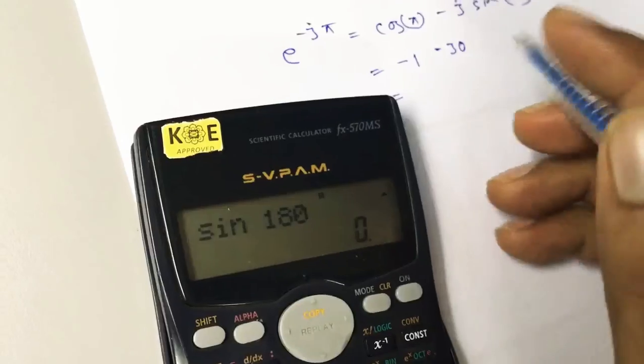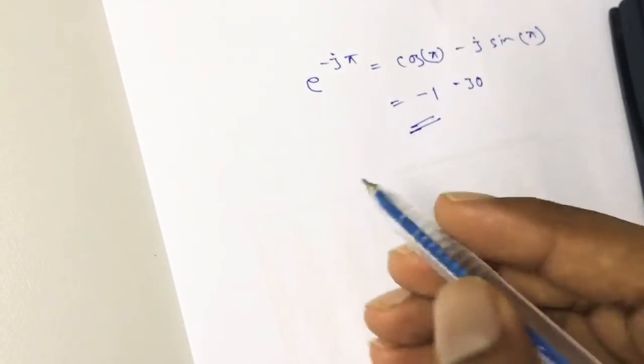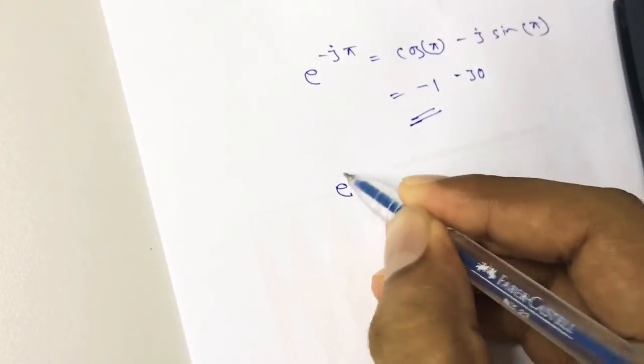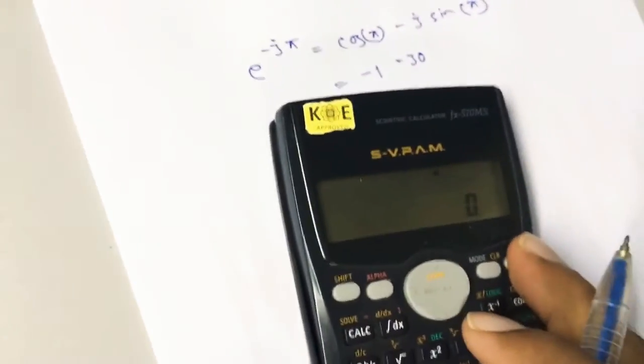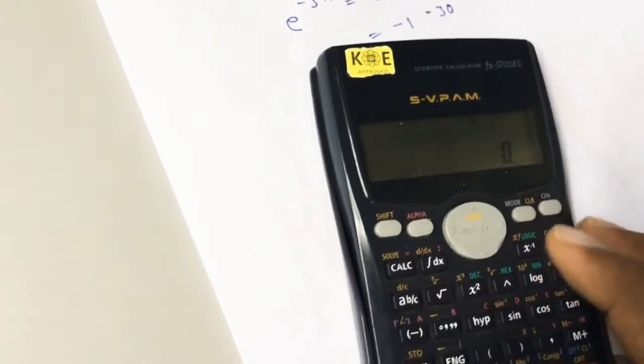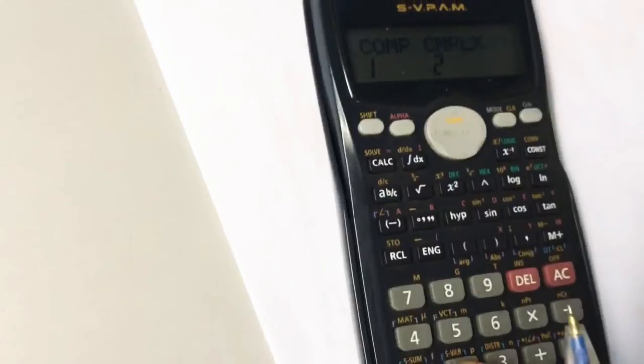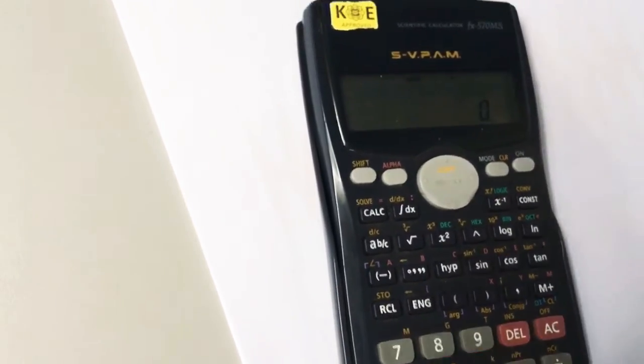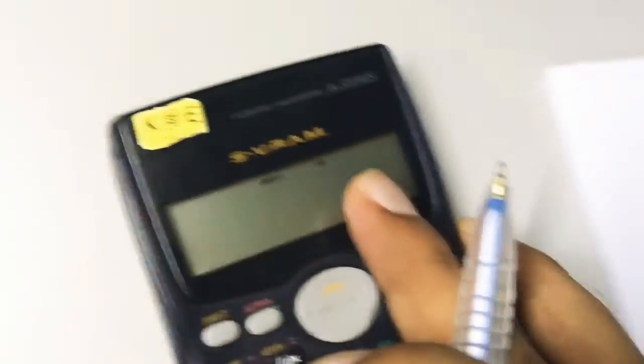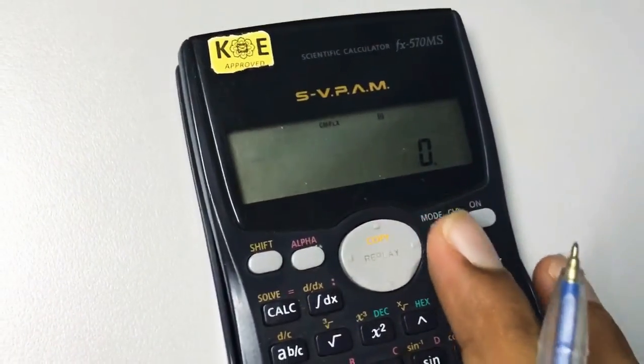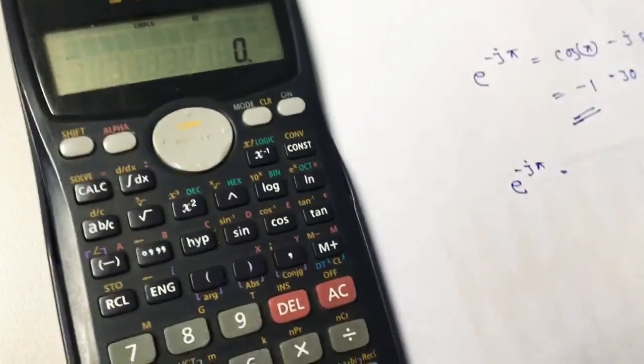So this is our value. If you want to find out the same value in the calculator, what we have to do is go to the complex mode, then also it is in radian now.